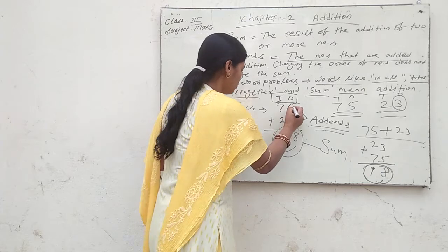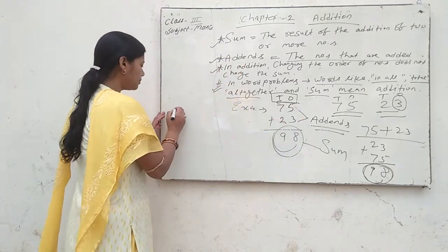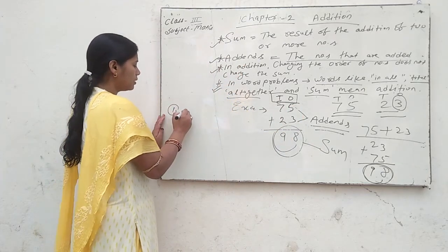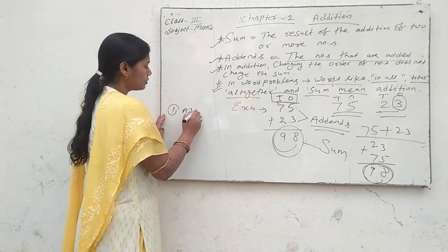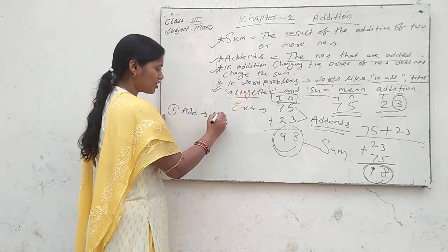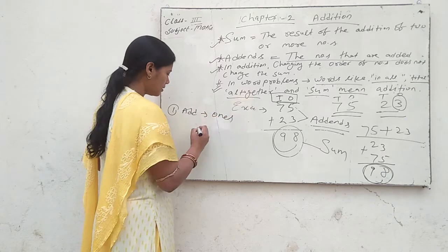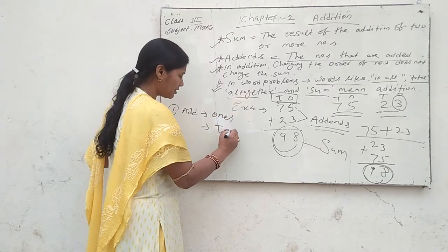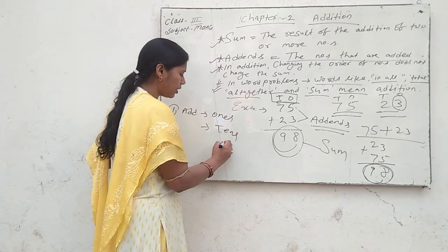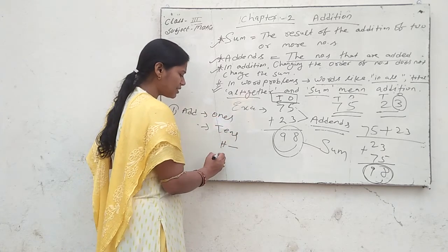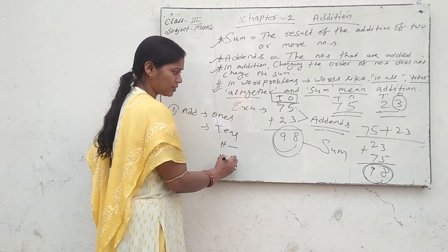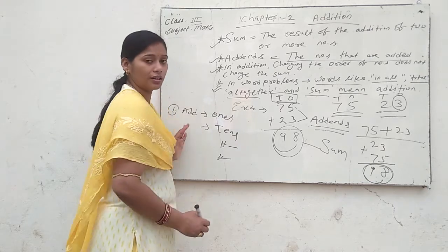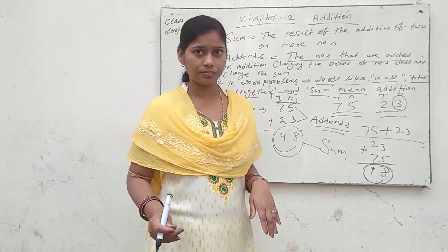It means first you add the ones place, then the tens place, then the hundreds place, then the thousands place — and so on. Thank you.